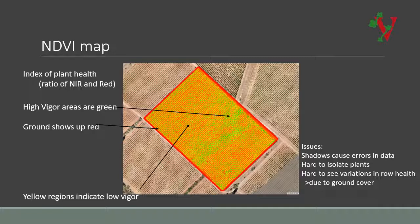Even with properly calibrated images, low resolution from satellite images or high-flying aircraft can generate artifacts from shadows which lead to useless data. In this NDVI image, it becomes more clear that there is a vigorous patch in the middle of the field.